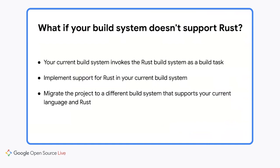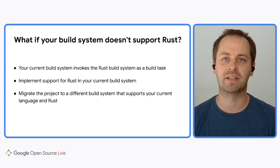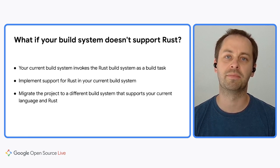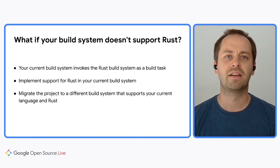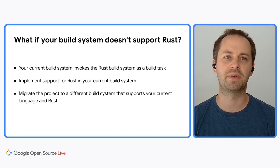And now, handing it off to Marcel to talk about the build system. Thank you, Dimitri. Hello everybody, my name is Marcel. I work as a software engineer at Google and I work with Dimitri. As he said, you will need to evaluate your current development process and plan how Rust will fit in. Let's talk about your build system. There is a chance that your project uses a build system that does not support Rust, and in that case you will need to take care of that first. There are two options. Your first option is to add a second build system to your project — for example, Cargo — which will be responsible only for Rust code, while your current build system invokes it as a build task. The second incremental option is to implement Rust support for your current build system. Finally, there is an option to migrate your large project to a different build system, but this is a huge task and will need to be done incrementally.